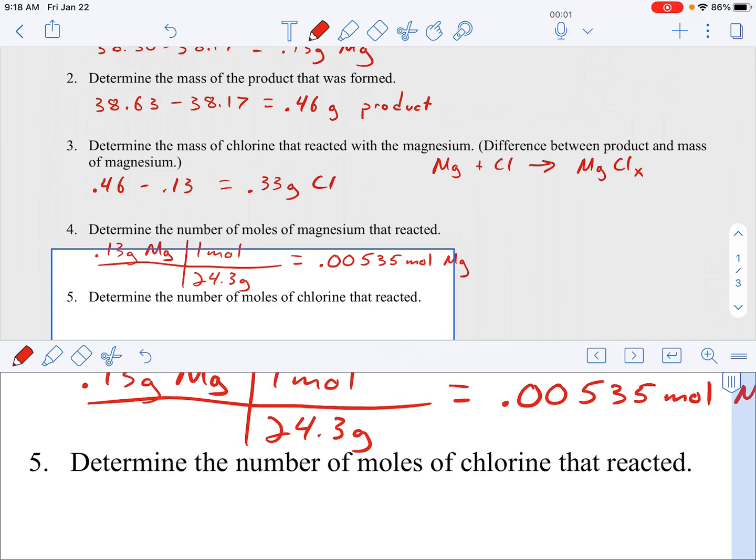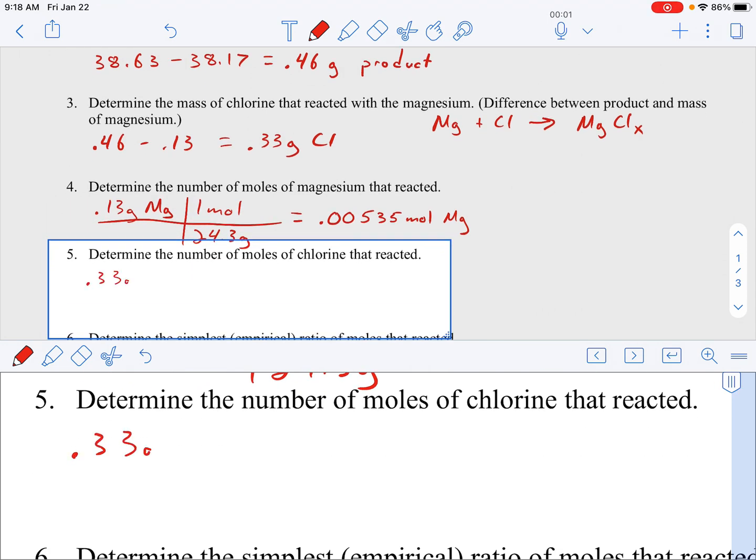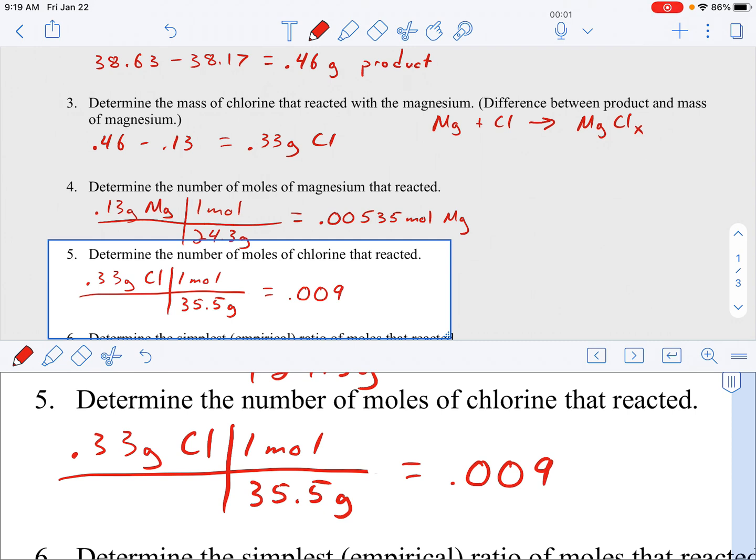And then question number five, determine the number of moles of chlorine that reacted, where we had 0.33 grams of chlorine. And we're only going to use 35.5 here. I know we talked last week about chlorine being a diatomic. The difference being here is that it's chlorine within a single atom. It's not a molecule of chlorine gas. It's chlorine that's part of an ionic compound that's then reacting. So it's just the individual molar mass, not the combined molar mass. So 0.33 divided by 35.5 equals 0.00930 moles of chlorine.